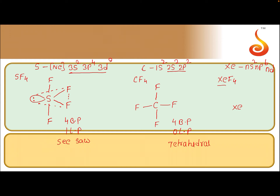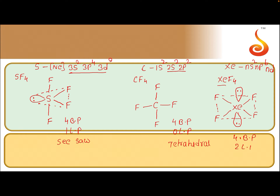After forming the four bonds, xenon still has four electrons remaining, which means two lone pairs. These two lone pairs occupy positions around xenon, giving it four bond pairs and two lone pairs — six total pairs. The shape of XeF4 is therefore square planar.